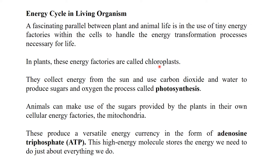Chloroplasts contain chlorophyll, and plants use water, carbon dioxide, and sunlight during the process of photosynthesis. That is why plants are called autotrophs, and they have energy factories called chloroplasts. Plants collect energy from the sun, which is the ultimate source of energy on the earth, and use carbon dioxide and water in this process.